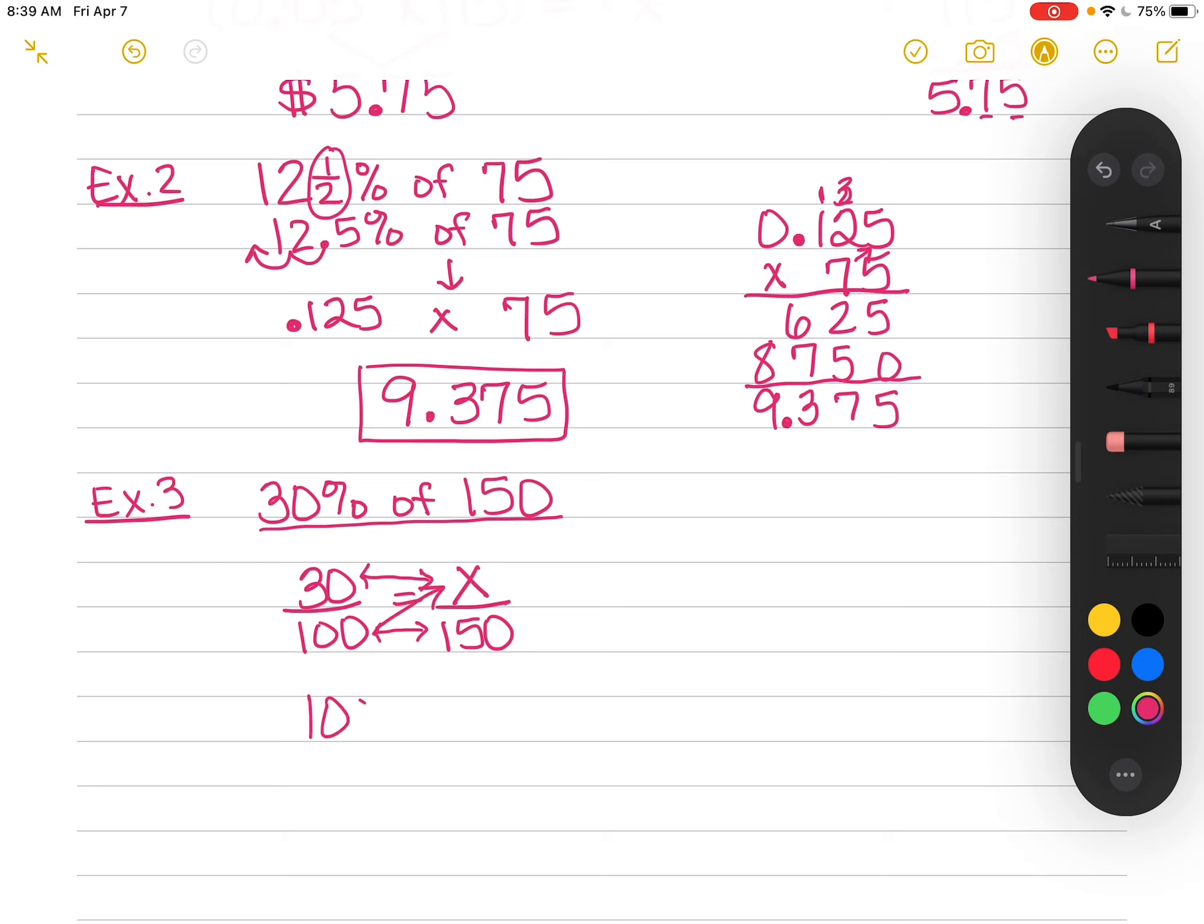100 times x is 100x. And 30 times 15 is 4,500. The way I did that very quickly in my head was I did 3 times 15 is 45, and then I just added those two zeros at the end. Now I divide by 100. Again, I can do this quickly in my head. And I get x equals 45.